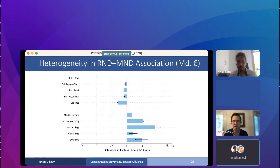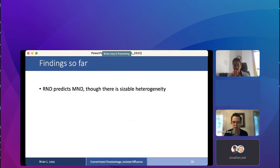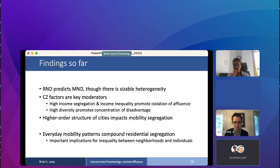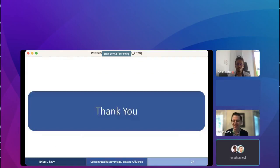So to wrap up, what does my analysis show? Residentially impoverished or affluent communities tend to visit and be visited by socioeconomically similar communities, but there's important heterogeneity. In particular, income segregation promotes the isolation of affluence. This suggests that higher-order structure of cities really impacts mobility segregation. This is important because we know that mobility-based exposures for any given neighborhood are critical for its level of vitality and its residents' life chances. That was a whirlwind, but I only had 12 minutes. I look forward to your questions, and thanks again, Noli and Jen.